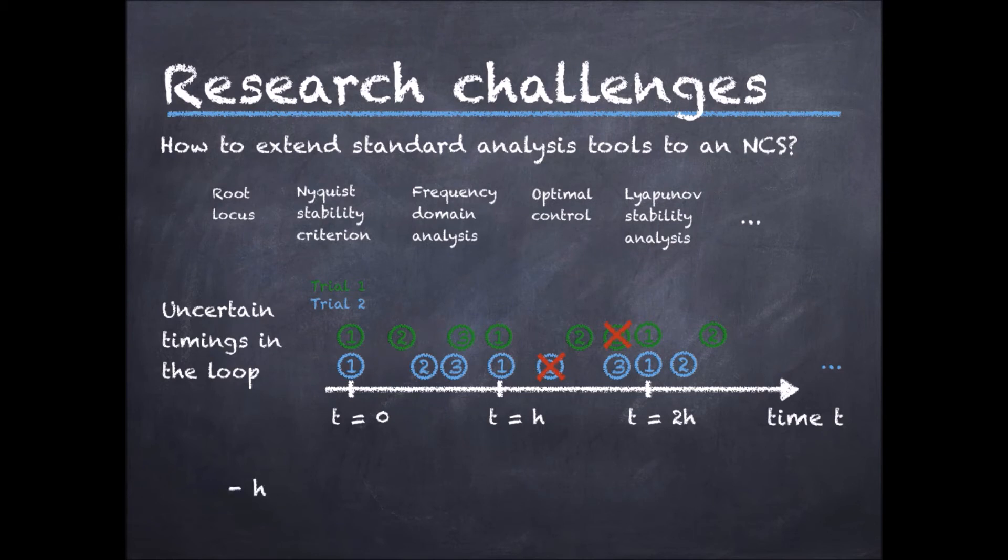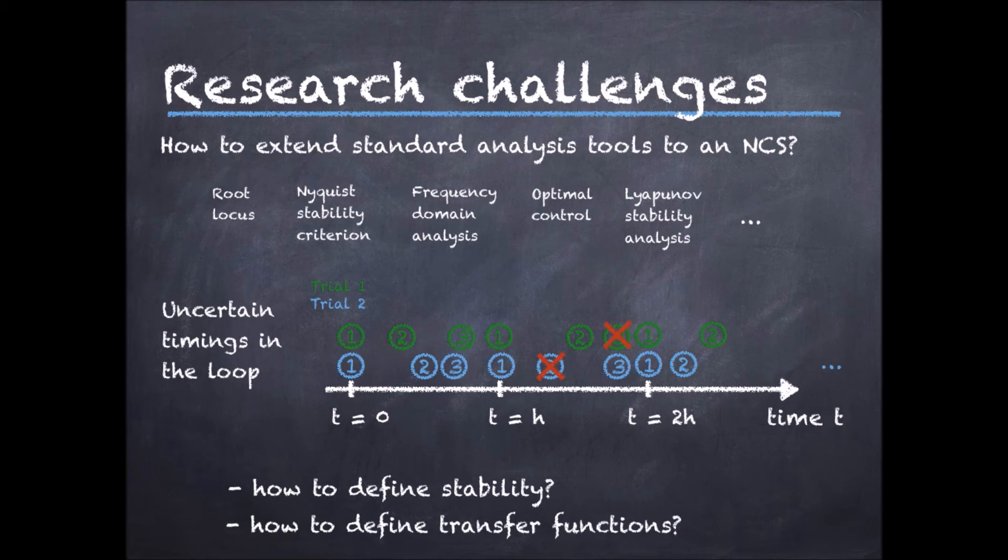So how can we define stability? Because it might happen that the system is stable for certain realizations of the delays and packet drops, but is actually unstable for other realizations. Moreover, many of the standard control tools I just mentioned rely on the concept of a transfer function, from input to output. How can we define the transfer function for a networked control system?